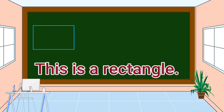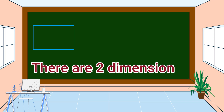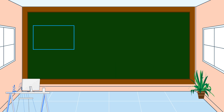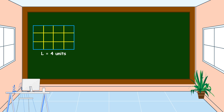This is a rectangle. How many dimensions are there? There are two dimensions: the length and the width. For example, the length is four units and the width is three units.